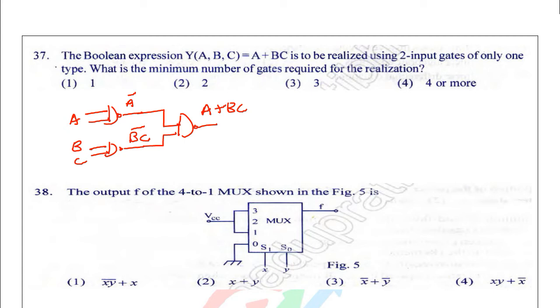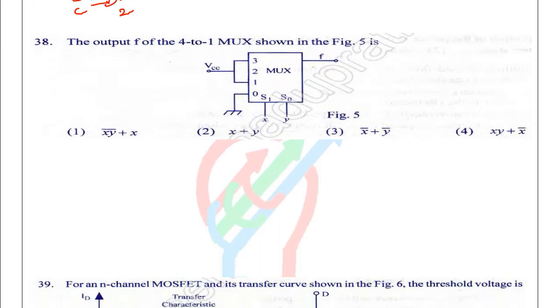The output f for the 4-to-1 multiplexer is shown in the figure. We need to find the output. Output f equals X bar Y bar times 0 (ground) plus X bar Y times 1, plus X Y bar times 1, plus XY times 1.